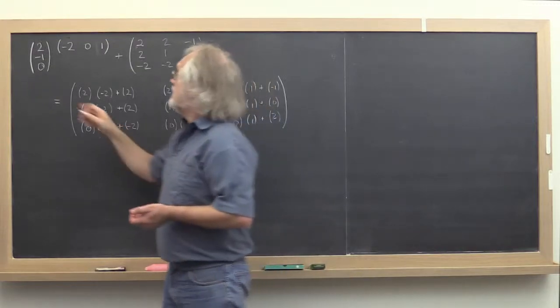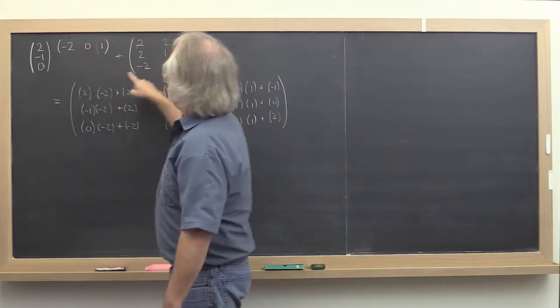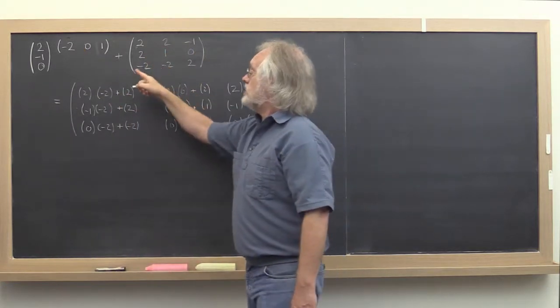You've just done an exercise where you computed an outer product of two vectors and added that outer product to a matrix. That's known as a rank 1 update.